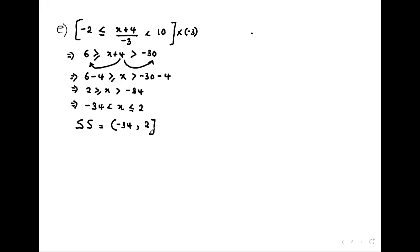A student asks to repeat about the inequality symbols — they're not following how they change direction. The teacher explains: as you multiply by the negative, what was less than or equal to becomes greater than or equal to; what was less than becomes greater than. Then taking 4 to the other side simplifies the expression.